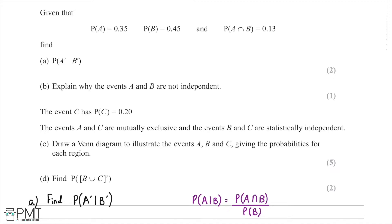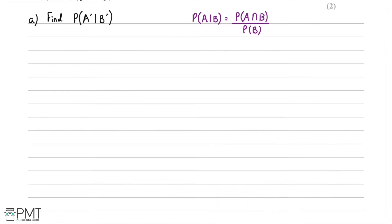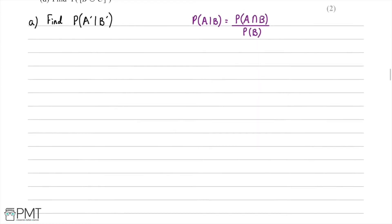In part A we're asked to find the probability of the complement of A given the complement of B. The complement symbol is the little dash at the top of the letter. We have a formula for conditional probabilities: the probability of A given B equals the probability of A intersect B divided by the probability of B.